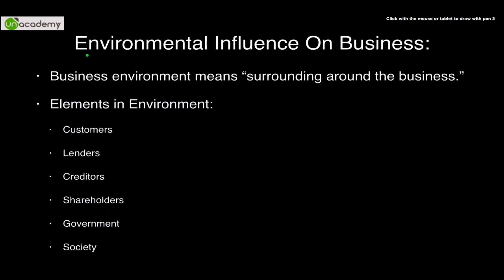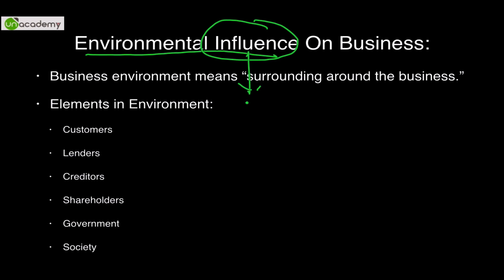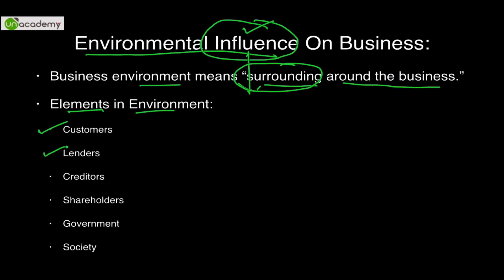Next is environmental influence on business. Business operates in a particular environment — in layman terms, its surroundings. The business environment means surroundings around the business. Elements in the environment include customers to whom we sell, lenders from whom we take loans or raw material, creditors, shareholders who buy our shares, government — the policies made by government impact us — and finally society's acceptance. All these elements are impacting or influencing the business.